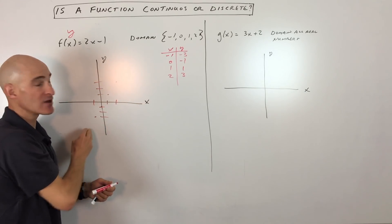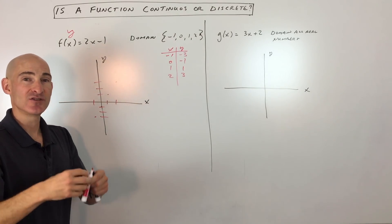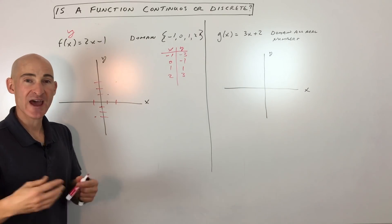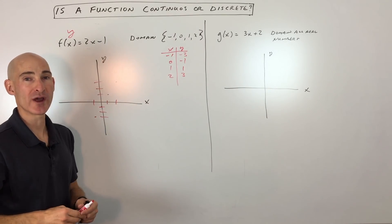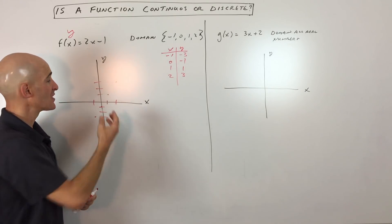So discrete basically means that they're separate. They're not connected. They're just those individual points. It's not continuous. So you can see there's a break in between each of the points. So it can just be those particular values.